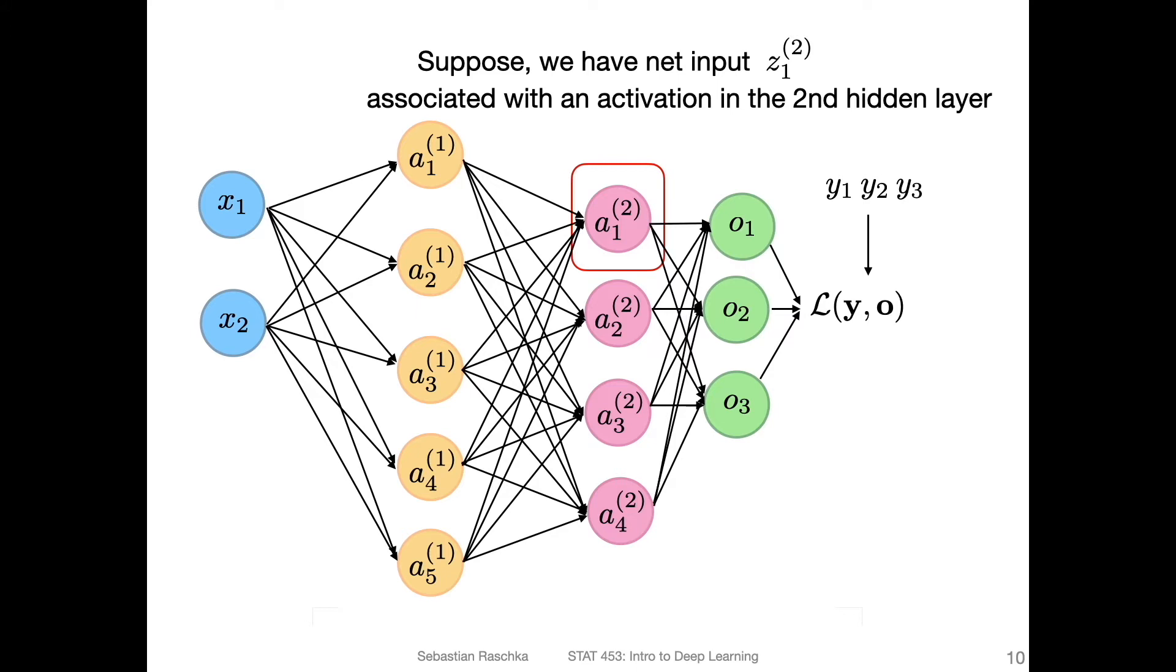And you can think of it as an additional normalization layer, and there are also some additional trainable parameters involved. So in the next couple of slides, I'm going to walk you through the procedure of batch normalization. Just for context, let's suppose we have a multi-layer perceptron, and we focus on this activation here in the second hidden layer.